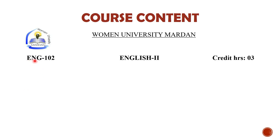The course code will be 102. It was 101 for your previous semester. Now it will be called English 2. The credit hours will remain 3, as in the first course.